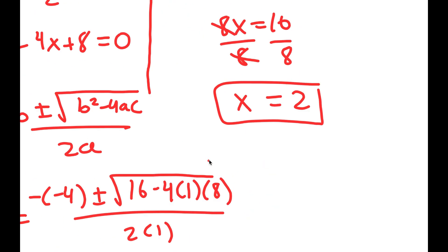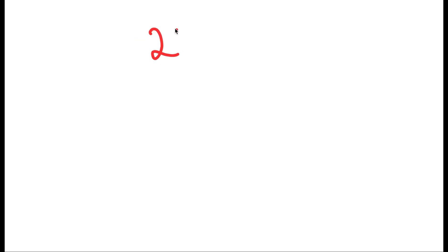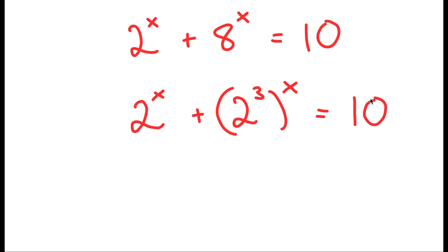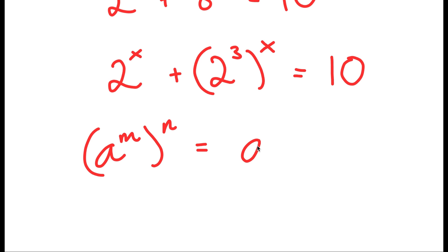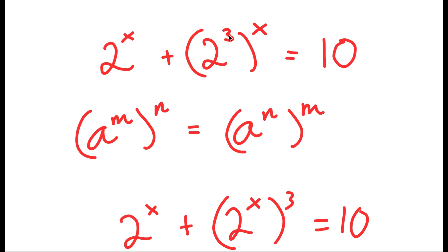So these are my three solutions. Now in this next problem, I'm going to solve the equation 2 to the power of x plus 8 to the power of x is equal to 10. To solve this, I'm going to start by rewriting 8 as 2 to the power of 3, so 8 to the power of x becomes 2 to the power of 3 to the power of x. Using the rule that a to the power of m to the power of n equals a to the power of n to the power of m, I switch the places of 3 and x to get 2 to the power of x plus 2 to the power of x to the power of 3 is equal to 10.